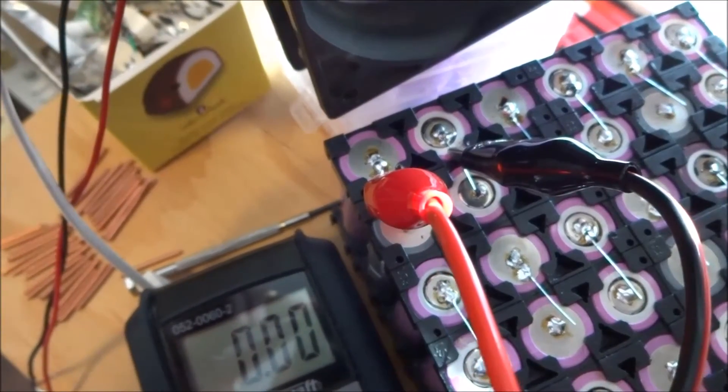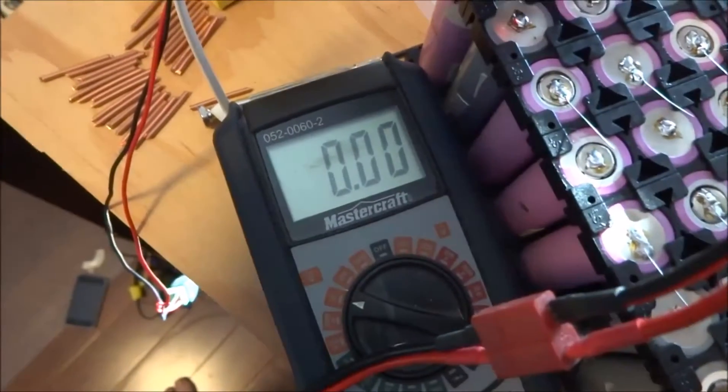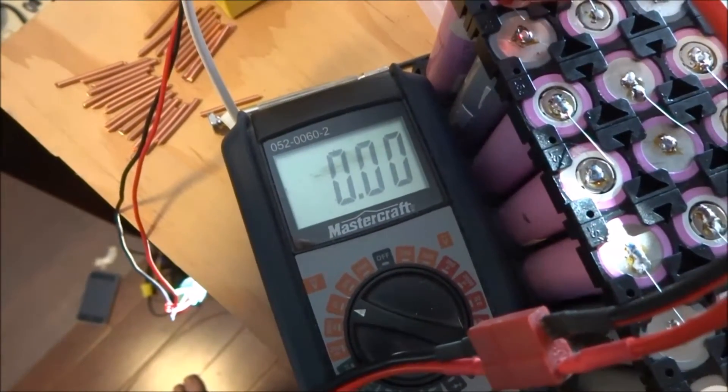So one way to make sure that you're not going to cross a short is to put a voltmeter. So here I have zero volts, so these can be bridged.